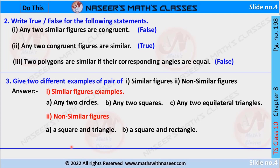Examples of non-similar figures: a square and a triangle — a square has four sides and a triangle has three sides, so their corresponding sides are not in the same ratio and their corresponding angles are not equal. Another example is a square and a rectangle — both have four sides, but their corresponding sides are not in the same ratio, so a square and a rectangle are not similar figures.